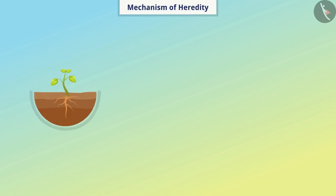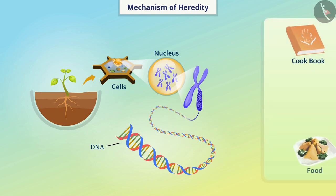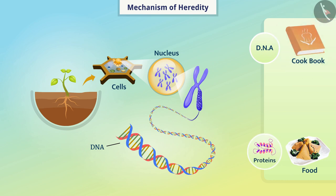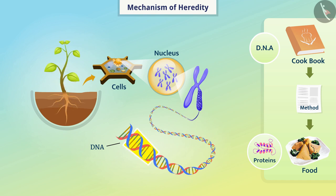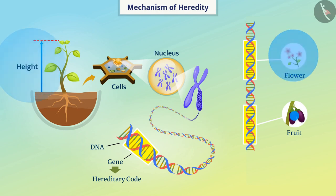Let us understand the mechanism of heredity. The body of an organism is made up of cells. The nucleus of cells consists of DNA. Just as a cookbook is a source of information for cooking, DNA in cells is a source of information for synthesizing proteins. The DNA contains specific segments for synthesizing specific proteins — we call each segment a gene. The information contained in the gene is called hereditary code. The gene regulates the synthesis of protein and in turn regulates the expression of a character. In this way, the expression of traits is controlled by genes, so genes are called the unit of heredity.